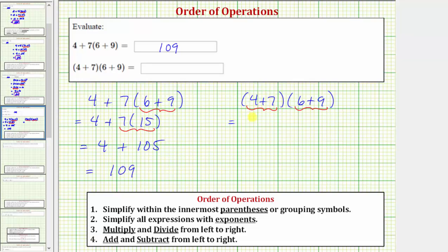Well, four plus seven is equal to 11, so we have 11 times six plus nine is equal to 15. Notice here we only have one operation, which is multiplication. 11 times 15 equals 165. So the second expression has a value, or simplifies to 165. Now let's verify both values on the graphing calculator.